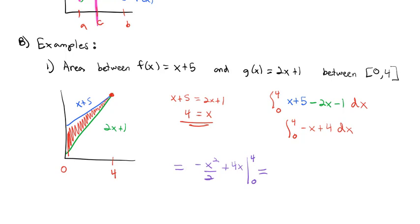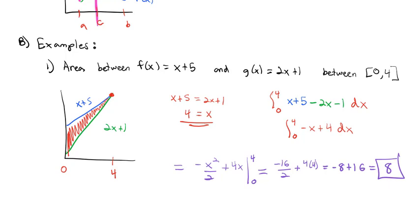Plugging 4 in: negative 4 squared is negative 16 over 2 plus 4 times 4. Then we subtract plugging 0 in, but 0 squared over 2 plus 0 times 4 is just 0. So what we end up with is negative 8 plus 16, giving an area of 8 square units between x plus 5 and 2x plus 1.